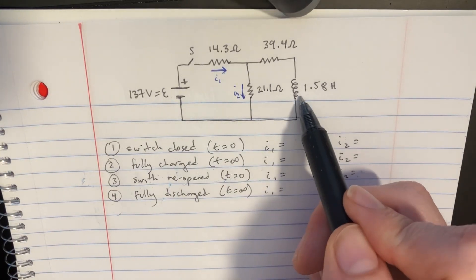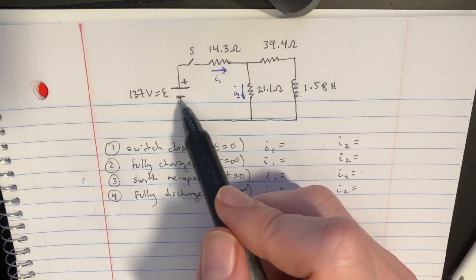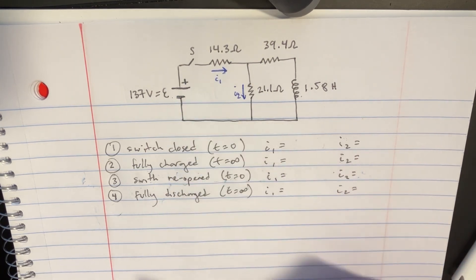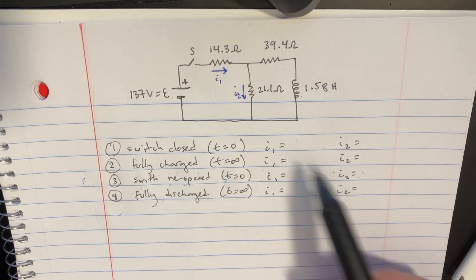We're looking at a circuit here which has an inductor, a couple of resistors, a battery, and the currents are flying in this direction. At first, the little switch is open, and we're going to be asked a couple of questions about these.